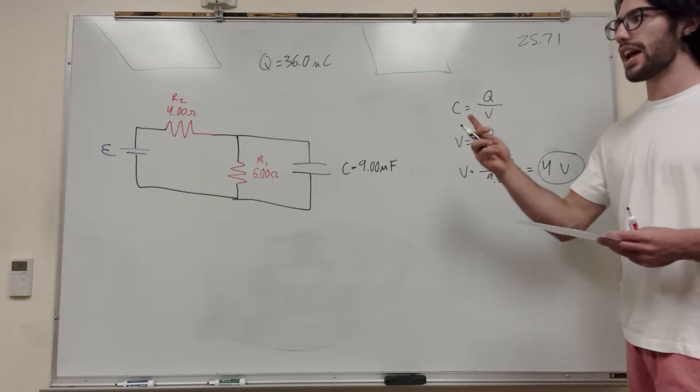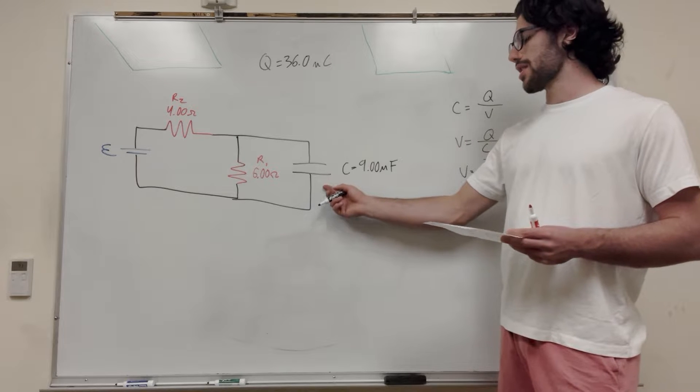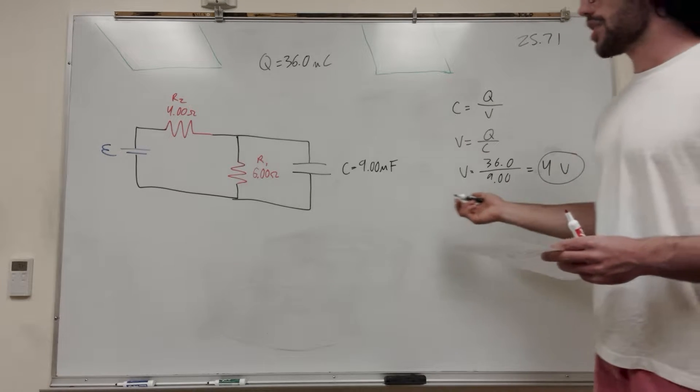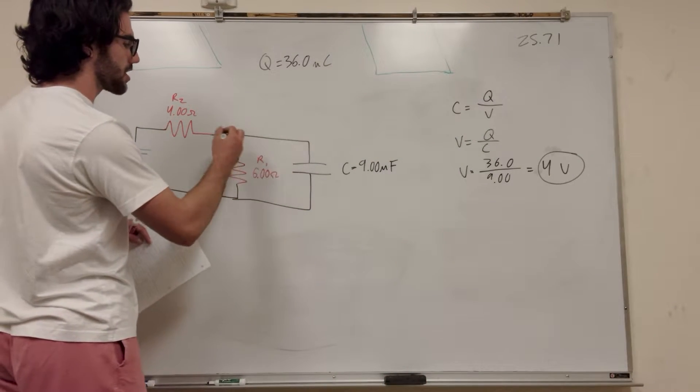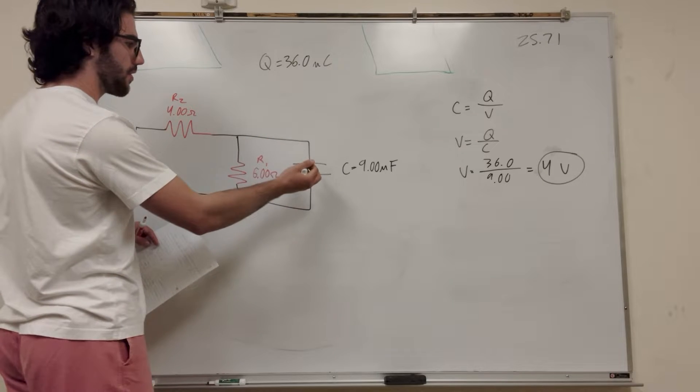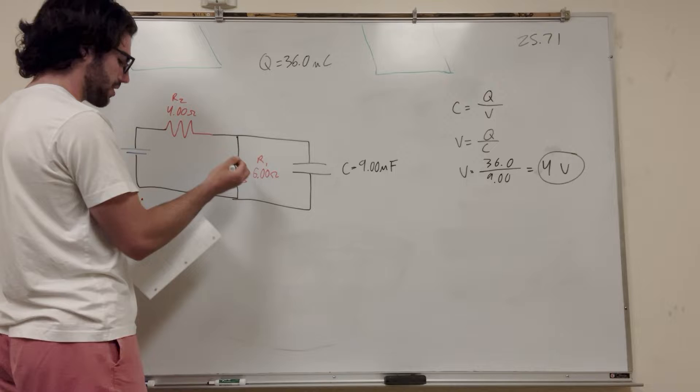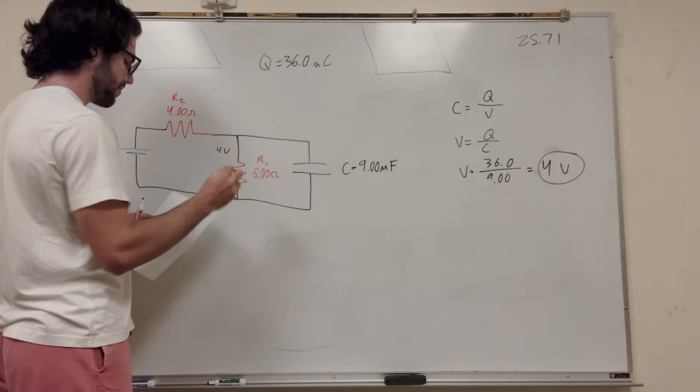But that's not the number we're looking for. That's not actually EMF. What that's saying is that in this part of the circuit it's equal to 4 volts. Because the voltage or potential is the same across parallel lines, we know the potential here is 4 volts and the potential here is 4 volts. Nice.